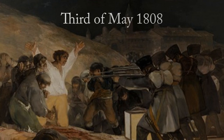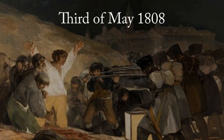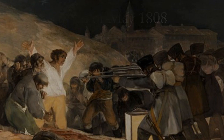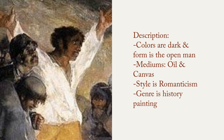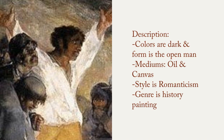The particular painting that I chose was the 3rd of May 1808. It is one of Goya's great modern paintings made in 1814. This painting is located in a museum in Madrid. The colors are dark and the form and textures of the open man represent the picture and give out meaning. The mediums used by Goya are oils on canvas. Romanticism is the painting's style and its genre is history painting.